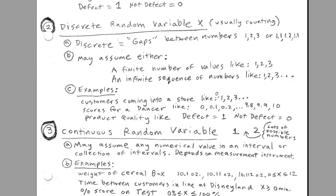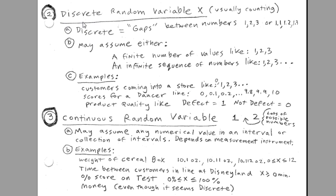We've got to talk about being polite. You have to be very discrete. No, no. Discrete random variable, that's x. That just means we're usually counting. Discrete numbers have gaps. So 1, 2, 3, or 1.1, 1.2, 1.3. This is in contrast to a continuous random variable. This is weighing boxes of cereal or timing things. So it depends on the measurement instrument.